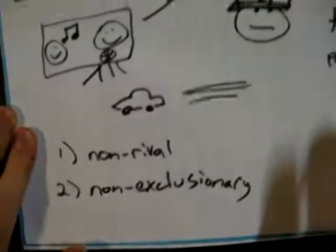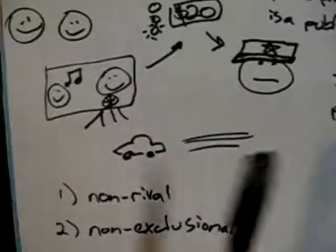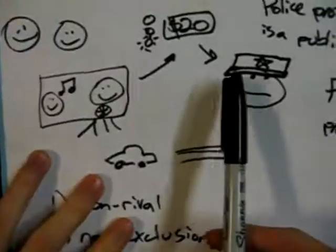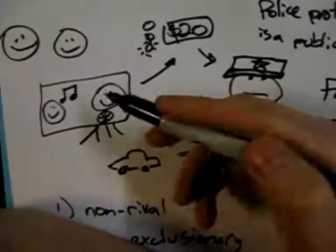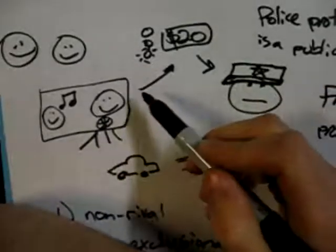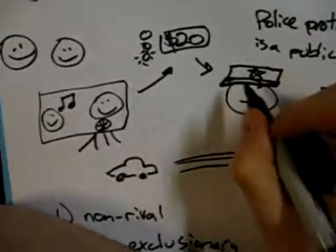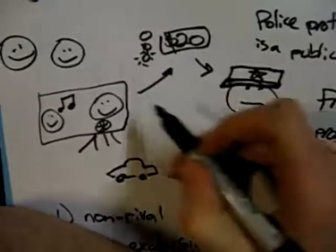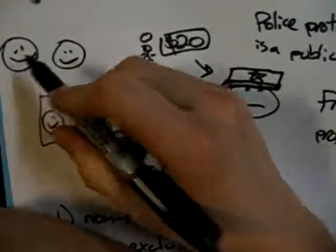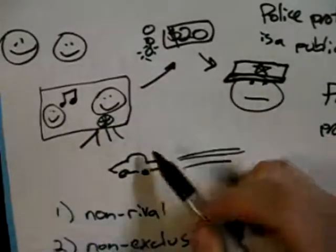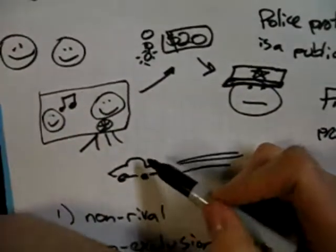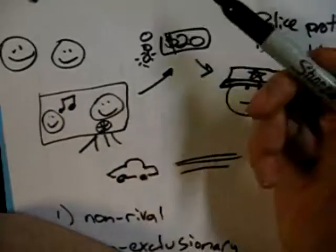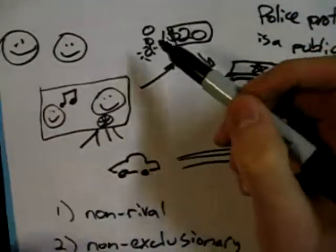But this second quality, non-exclusionary, this means that we can't exclude people from benefiting from the good or service. So just to go further with that, when I pay my $20 for the police protection, I can't exclude these guys from getting police protection. I'm like, hey cop, take this guy off the road for me, but leave him on the road for that guy. Kind of hard to do, right? Kind of hard to do.